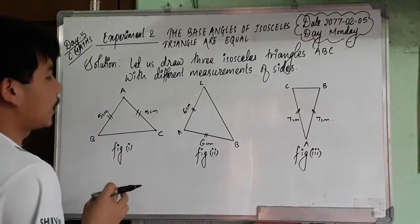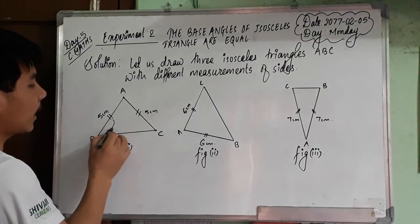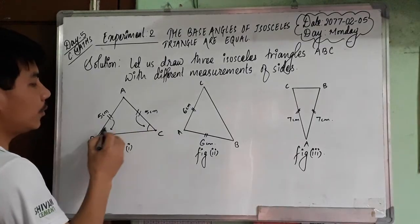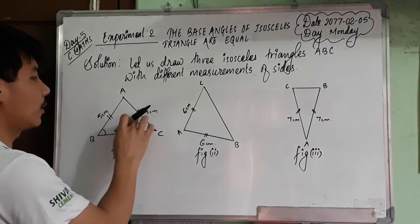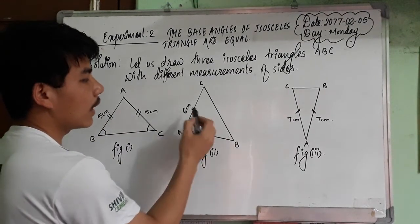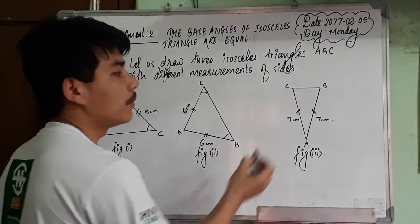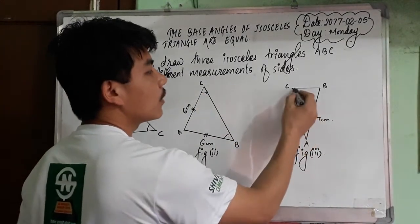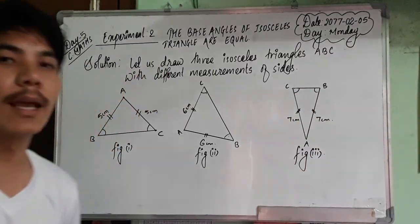These two sides are equal, these two sides are equal, so these are isosceles triangles. When two sides are equal, the angle opposite this side and the angle opposite this side - these two angles are the base angles. These two base angles need to be equal, and we'll prove that.